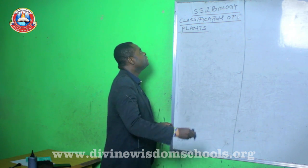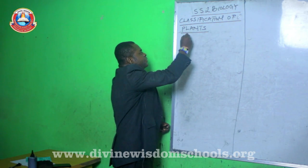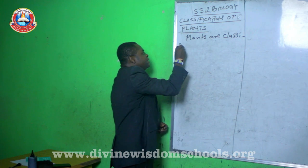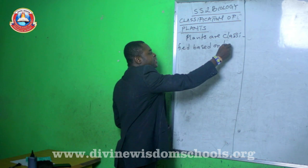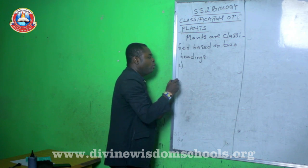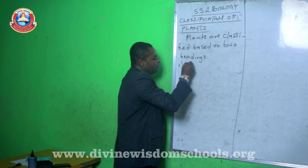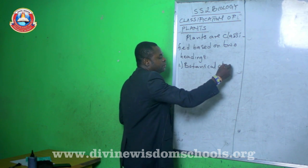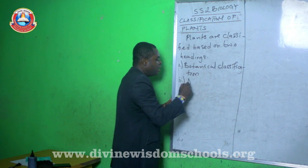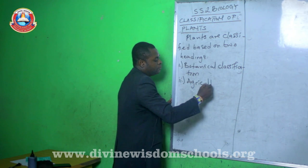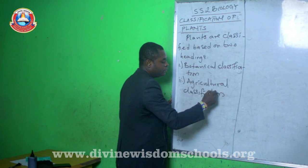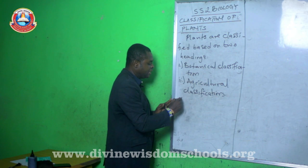Plants are classified based on two headings. Number one is botanical classification, and then we have agricultural classification. Let's take them one after the other. Let's talk about botanical classification.